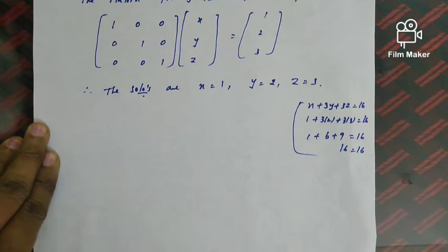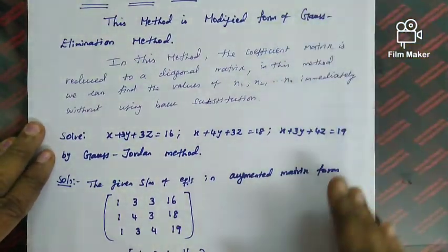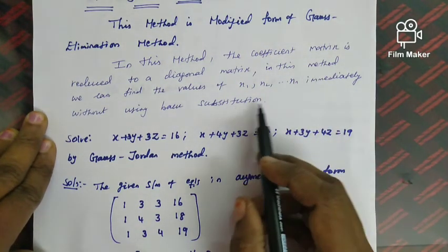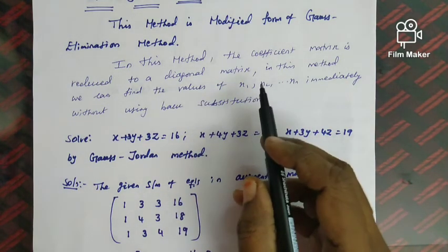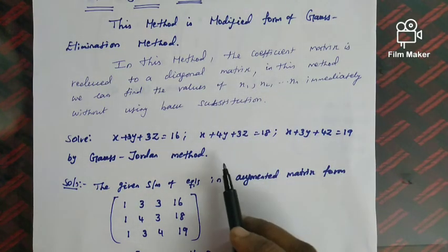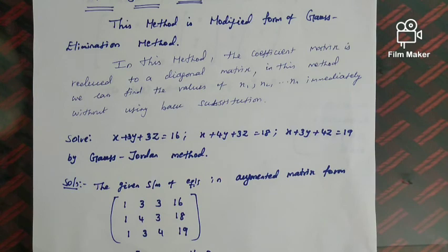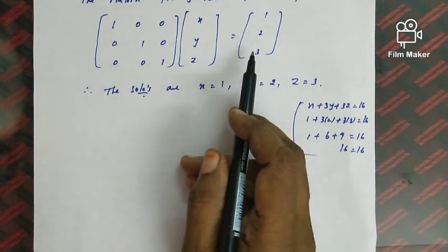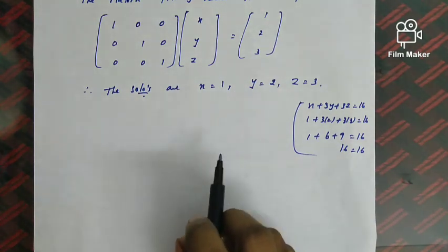This is the Gauss-Jordan method. In summary: write the system in augmented matrix form, use row operations to reduce it to a diagonal matrix where all off-diagonal elements are zero, then read off the solution directly without back substitution. Thank you for watching.